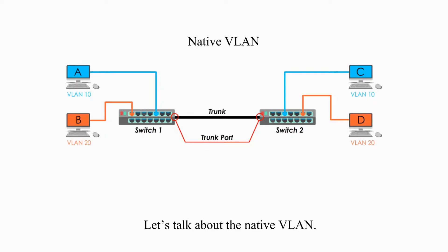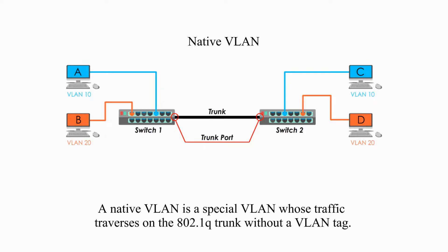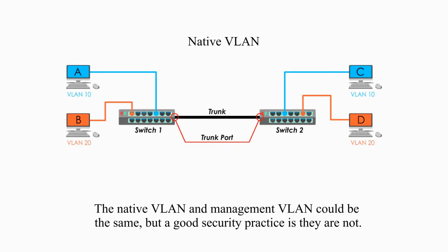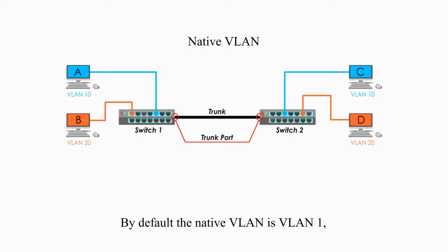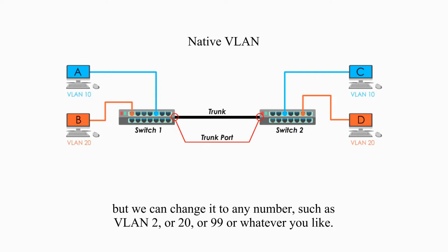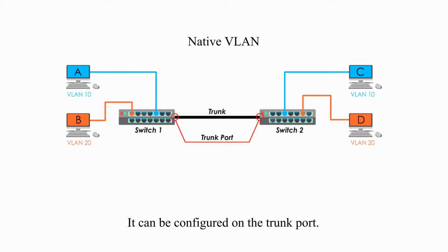A native VLAN is a special VLAN whose traffic traverses the 802.1Q trunk without a VLAN tag. The native VLAN and management VLAN could be the same, but good security practice is that they are not. By default, the native VLAN is VLAN1, but we can change it to any number, such as VLAN2, VLAN20, or VLAN99. It can be configured on the trunk port.